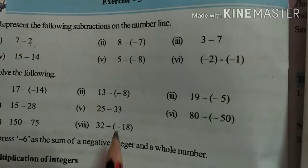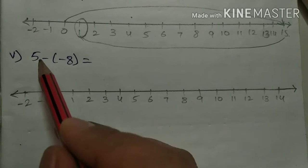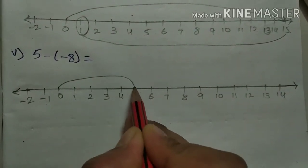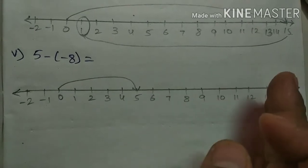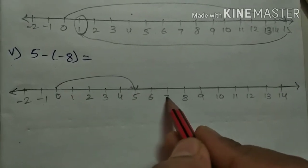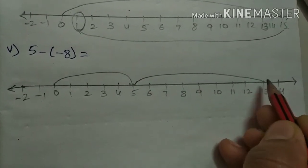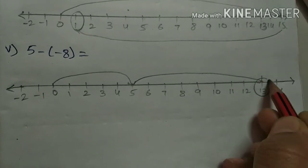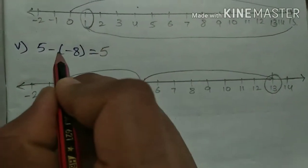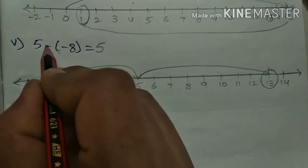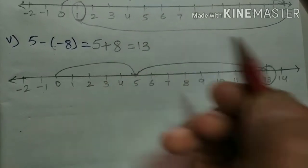Now, fifth one: 5 minus of minus 8. See here — first number is 5, so move from 0 to 5. Afterwards, here we are subtracting a negative integer. So move to the right side of 5. Count 8: 1, 2, 3, 4, 5, 6, 7, 8. So up to 13 — draw this. Circle the answer, which is 13. Here I will explain: write first 5, then minus into minus — this bracket means into — minus into minus becomes plus. So 5 plus 8 is nothing but 13.